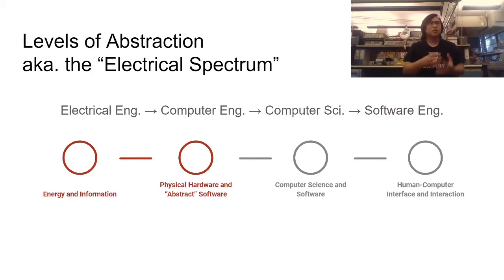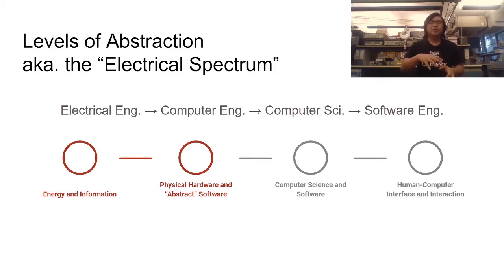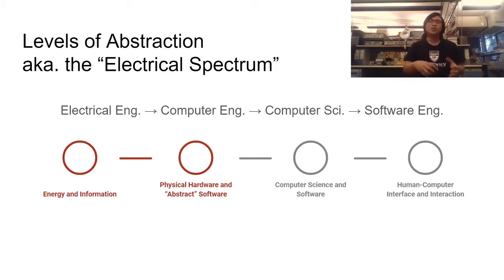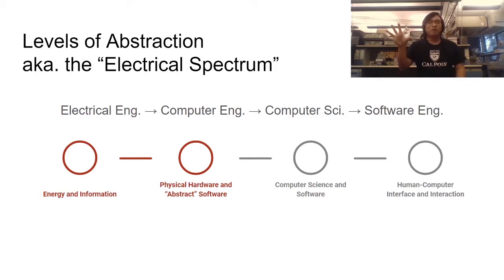Start with software engineering: your Facebook app, your social media, things that you interact with on a software level. The software engineers have to understand what the client wants and make the software product suitable to the client, the customer, or the consumer. We have the computer scientists who try to understand the algorithms and the math behind all that. We have the computer engineers who work with the physical devices, the physical computers, phones, and hardware to understand how we're going to make the physics interact with this programming, with this software.